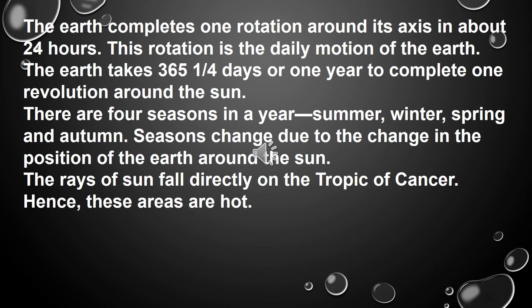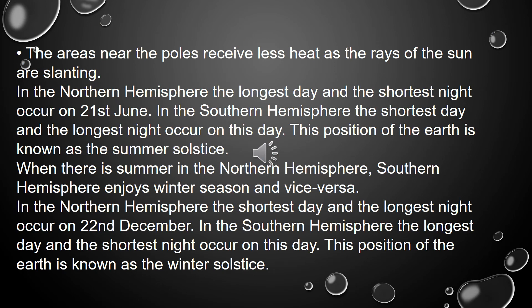There are four seasons in a year: summer, winter, spring, and autumn. Seasons change due to the change in the position of the earth around the sun. The rays of the sun fall directly on the Tropic of Cancer, hence these areas are hot. The areas near the poles receive less heat as the rays of the sun are slanting.